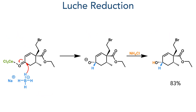In the next step the ketone was reduced using a Luche reduction. Cerium trichloride first coordinates to the carbonyl, making it more electrophilic and driving selectivity for direct addition of the hydride rather than conjugate addition. Quenching the alkoxide intermediate that is formed produced the target alcohol in an 83% yield.